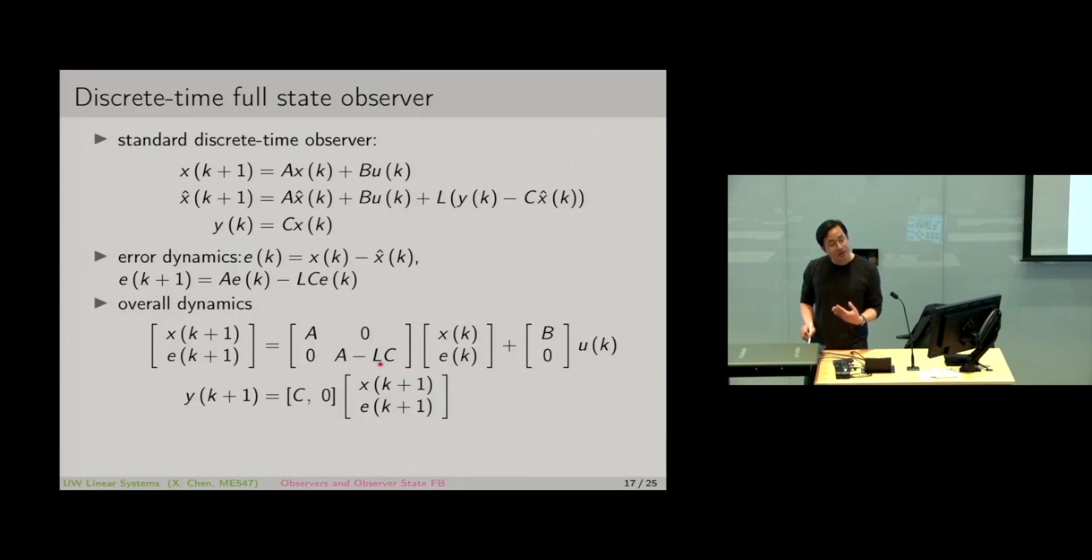We can arbitrarily place the eigenvalues of the observer as well. We can choose L such that the eigenvalues can be anywhere we want in the complex plane. The only difference is we want to place the eigenvalue inside the unit circle instead of on the right half plane.